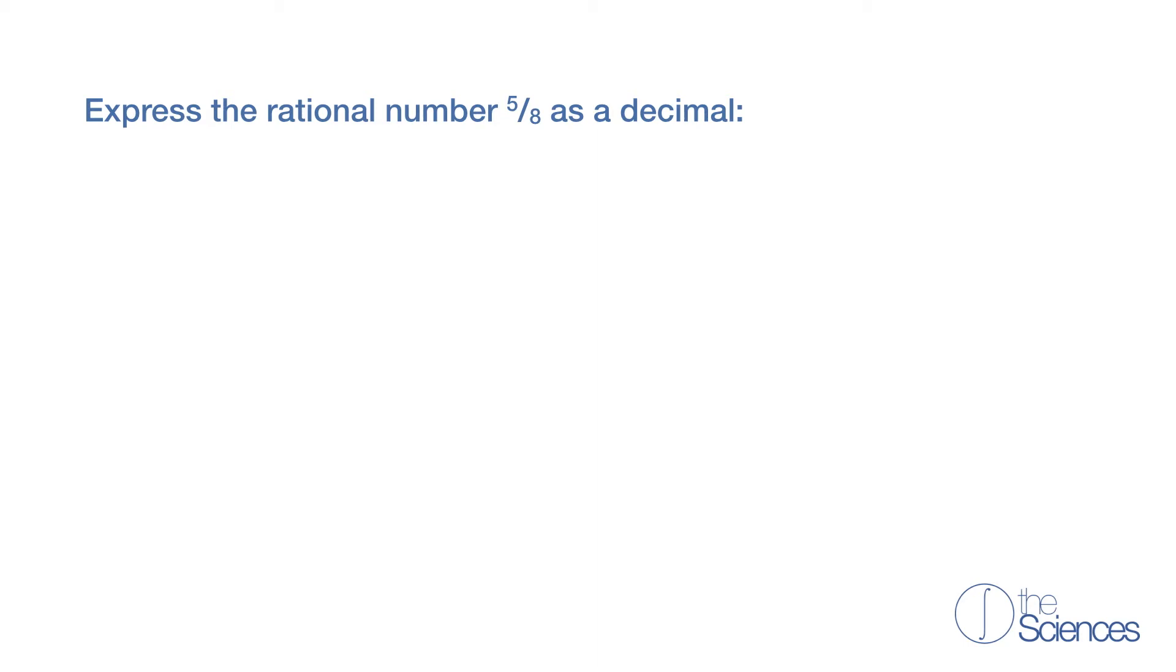Express the rational number 5 eighths as a decimal. So if we have 5 eighths to convert that into a decimal, what we're going to do is divide 5 by 8. So here we're going to write 5 divided by 8.